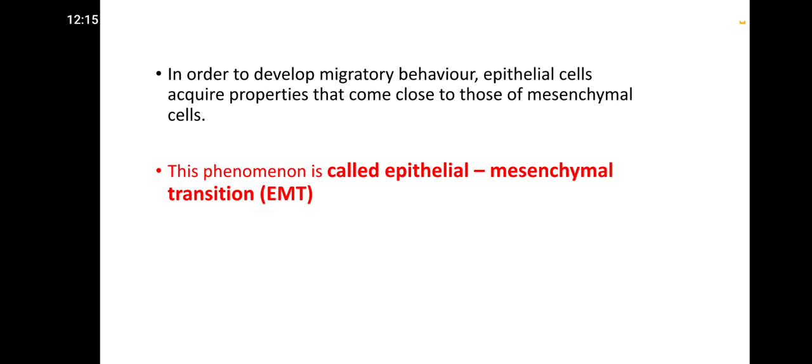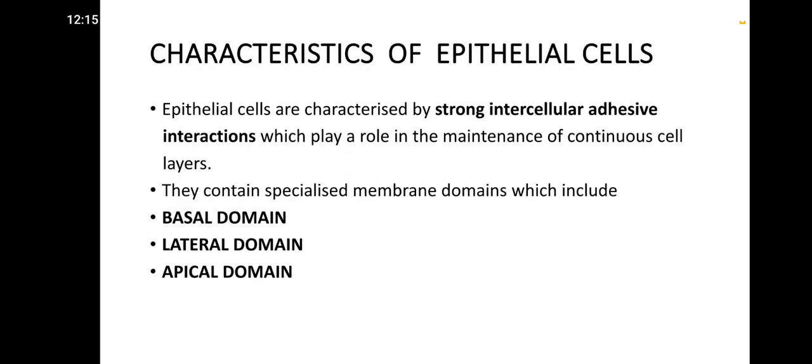In order to develop migratory behavior, epithelial cells acquire properties that come close to those of mesenchymal cells. This phenomenon is called epithelial mesenchymal transition, or EMT.